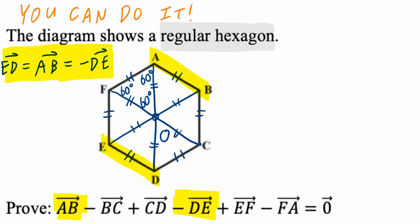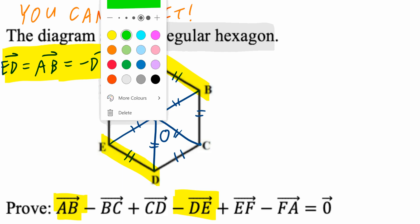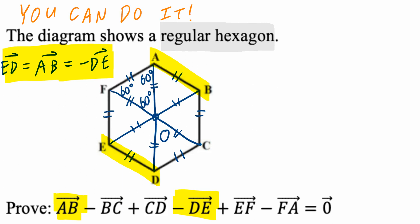Likewise, thinking about the next part: negative vector BC equals vector CB, which equals vector EF. These are equal vectors with the same magnitude and the same direction.